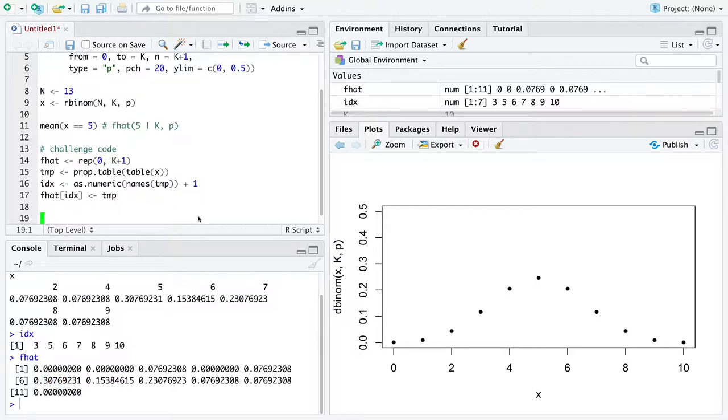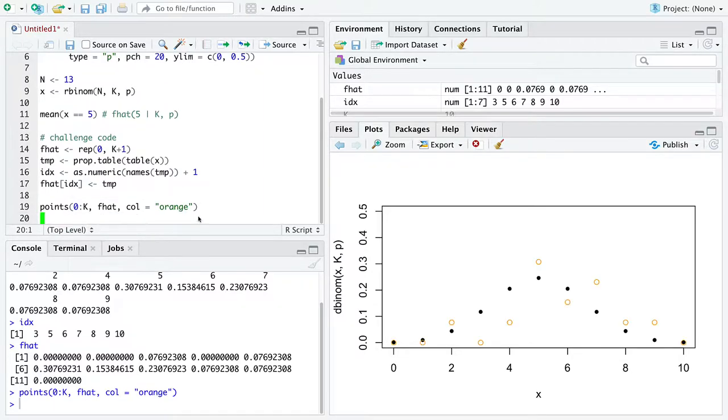Okay, so now that we have f hat here, we can add to our plot, across all the values that x can take on, the vector of f hat, and we want to color the points orange.